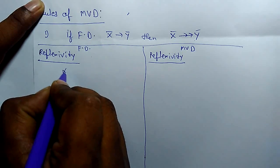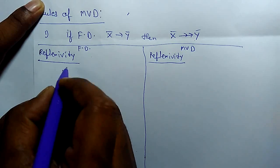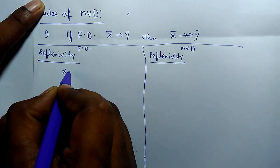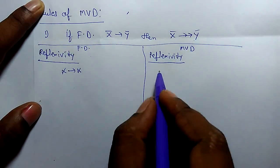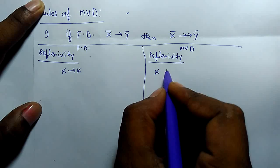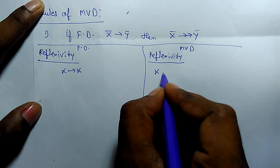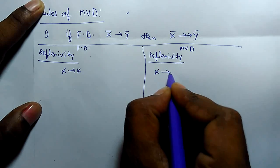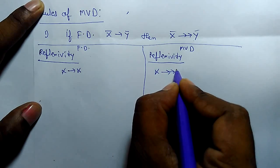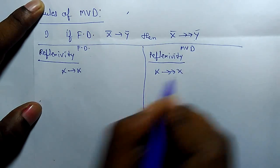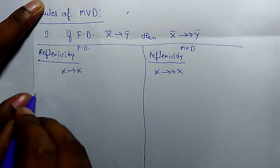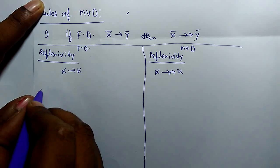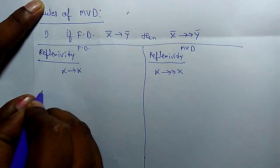If X is an attribute, it functionally determines itself. Similarly, if X is an attribute in multivalue dependency, then it also multivalue determines itself. The next rule is augmentation.